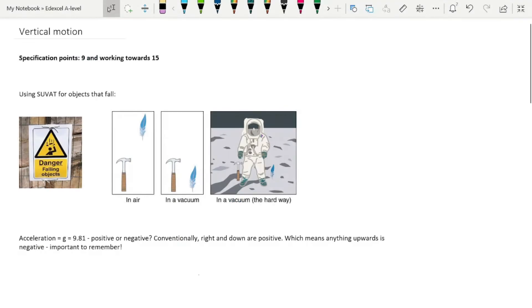Today we're going to be talking about using SUVAT to work on problems that are moving vertically. SUVAT is specification point number 9, and we are working towards 15, which is the independence of vertical and horizontal motion with projectiles.